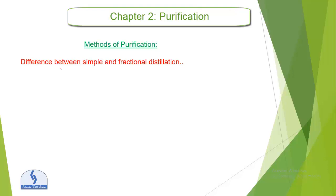Now the method of purification — the difference between simple and fractional distillation. We already started the simple distillation method and the fractional distillation, so we should write it over here. Simple distillation is used to separate liquids with boiling points having a temperature difference of at least 50 degrees centigrade. But in fractional distillation, it is used to separate liquids with closer boiling points.